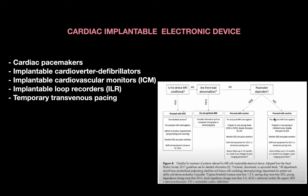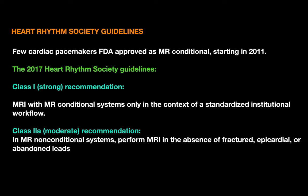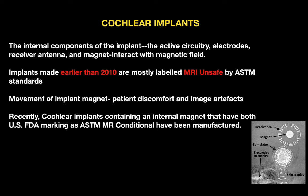If the patient is not pacemaker dependent, proceed with caution with pre- and post-MRI interrogation, ECG and pulse oximetry monitoring, and device follow-up at three to six months or one week if changes are seen in post-imaging parameters. Few cardiac pacemakers were FDA-approved as MR Conditional starting in 2011. The 2017 Heart Rhythm Society guidelines made two recommendations: Class 1 (strong) — MRI with MR Conditional systems only in the context of standard institutional workflow; and Class 2a (moderate) — in MR non-conditional systems, perform MRI in the absence of fractured, epicardial, or abandoned leads.